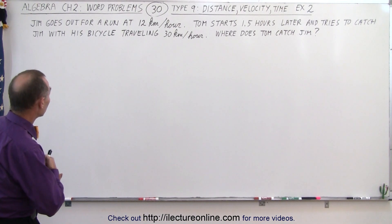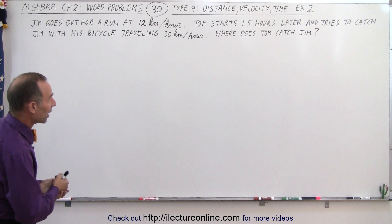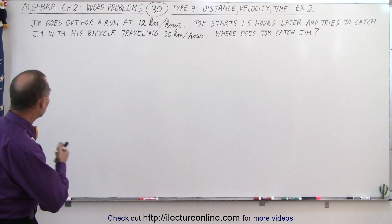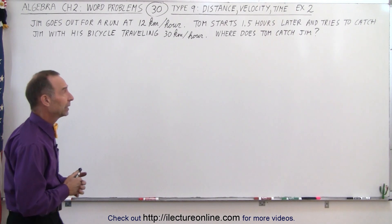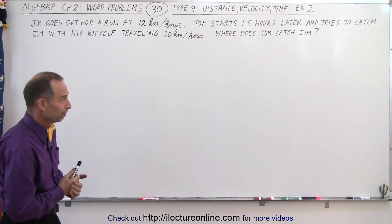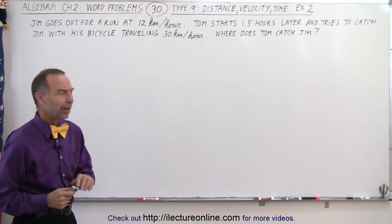We have Jim that goes out for a run at 12 kilometers per hour. Tom starts one and a half hours later and tries to catch Jim with his bicycle traveling at 30 kilometers per hour. And the question is, where does Tom catch Jim?